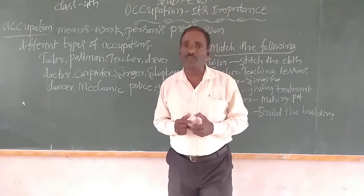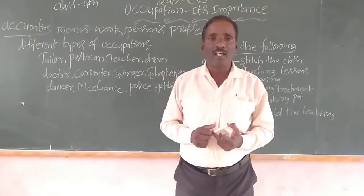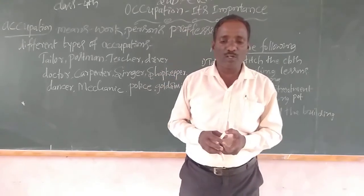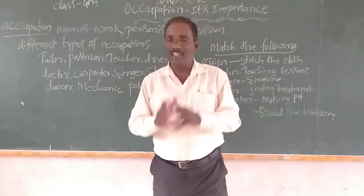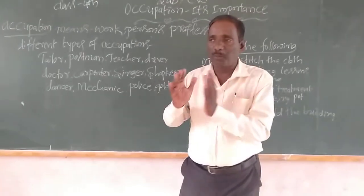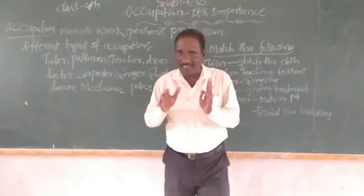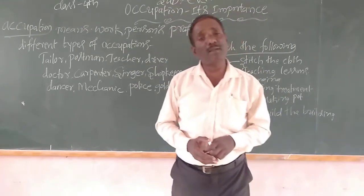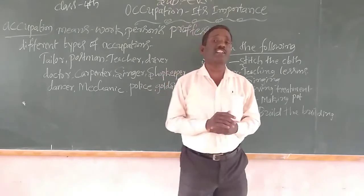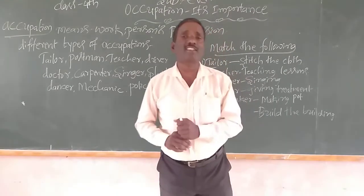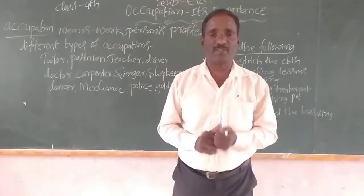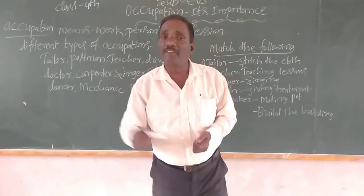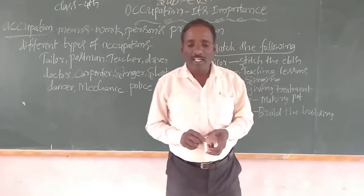In this chapter, after studying, we understand some points. We recognize the different occupations of our locality and other places. We identify the different types of occupations in our locality and other places. We also recognize the problems of working children in our society — the problems children and workers face in their working field.